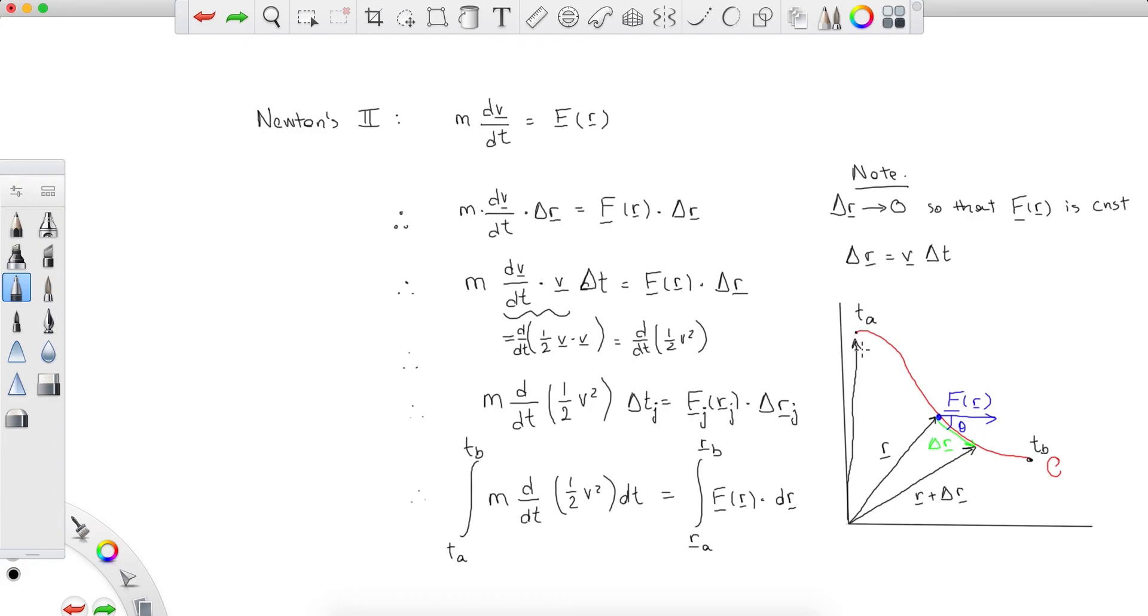Essentially, this is what mathematicians call a line integral. So we're essentially integrating over a curve, a curve which is the trajectory C, which is normally denoted as this. So integrating over the curve from ra to rb, which we denote C, and we're taking the integral of F of r dot product dr.